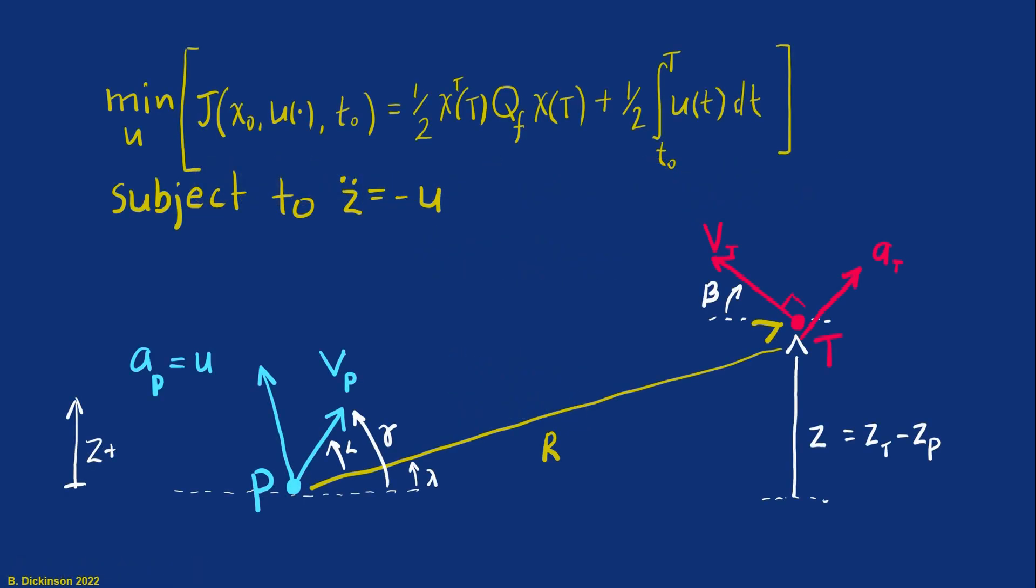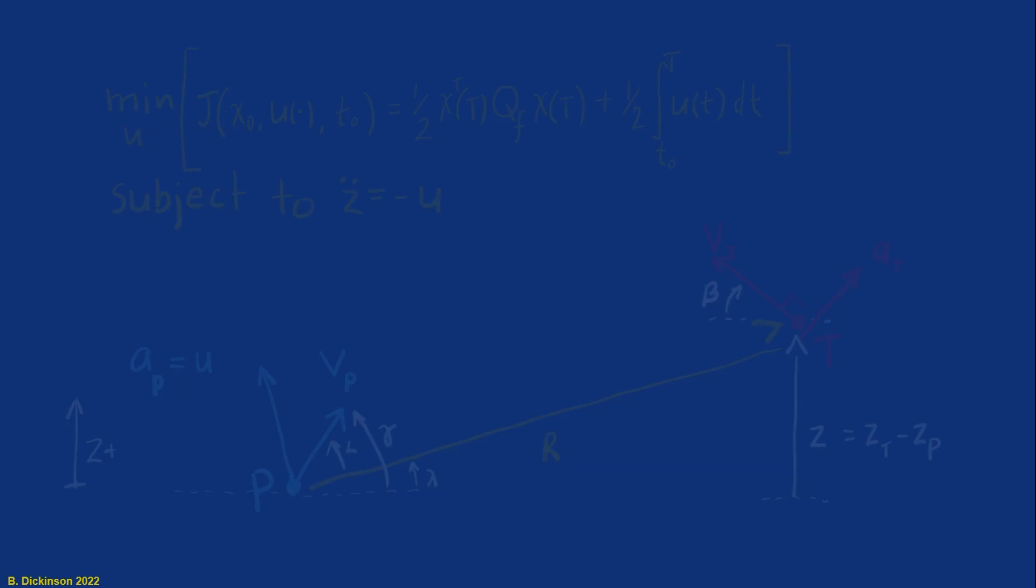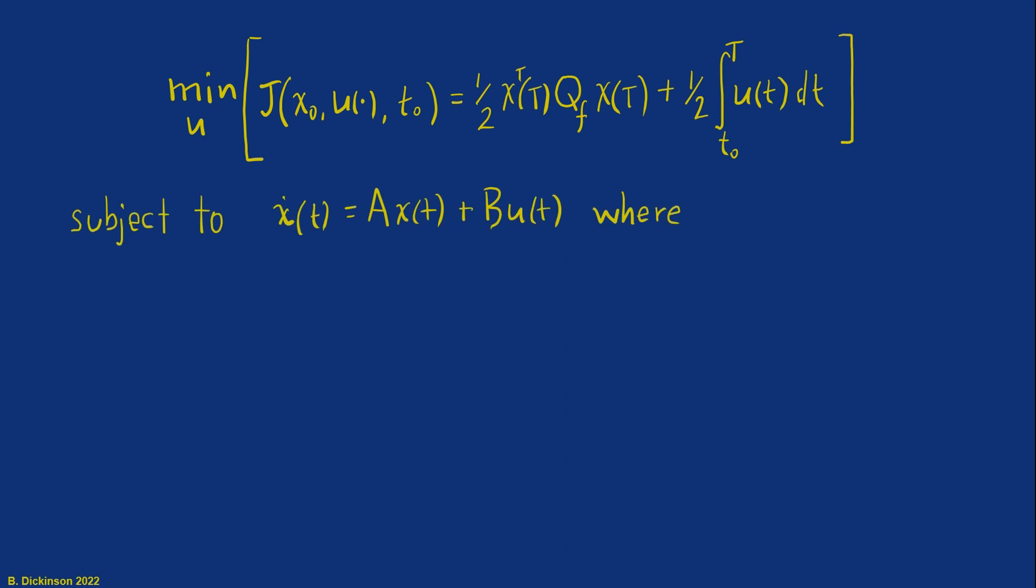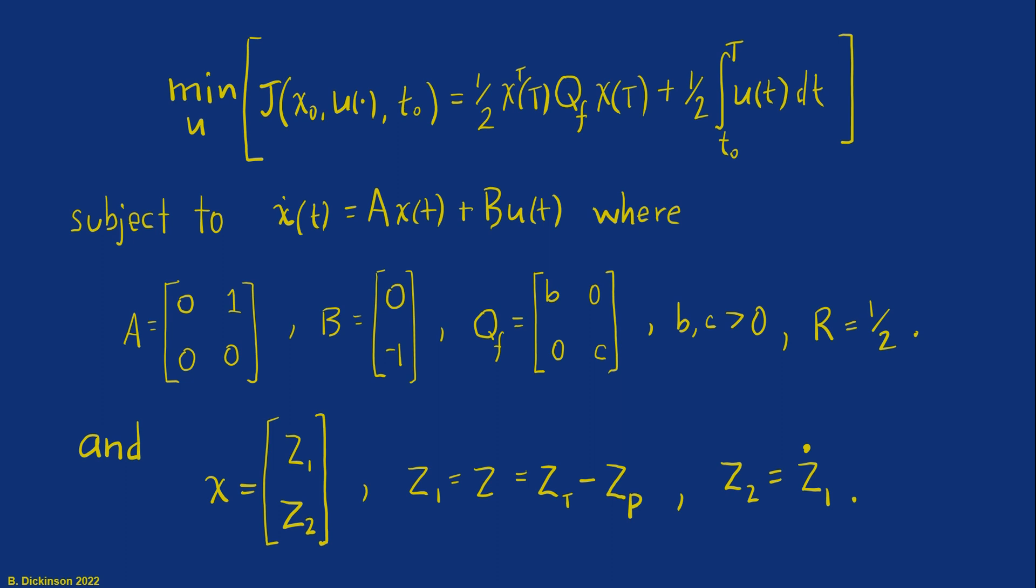In sections 1 and 2, we developed a linear quadratic control problem statement for a pursuer-target engagement. We wrote the kinematics as a linear time-invariant system and identified all the matrices involved in the problem. Our state was the relative position and the relative velocity of the pursuer and target.